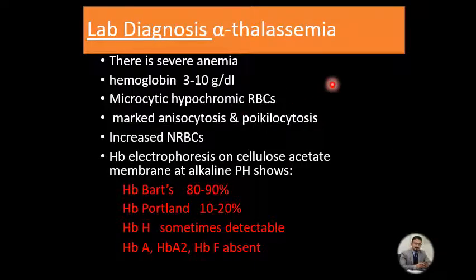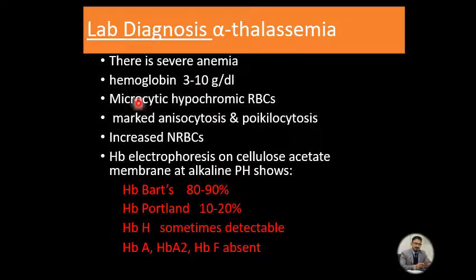For lab diagnosis of hydrops fetalis, the hemoglobin level is 3–10 g/dL, most commonly 3–5 g/dL. There is severe microcytic hypochromic red blood cell morphology with marked anisocytosis and poikilocytosis. Increased nucleated red blood cells are seen. On hemoglobin electrophoresis: HbBart is 80–90%, hemoglobin Portland is 10–20%, and HbH is sometimes detectable. Hemoglobin A, hemoglobin A2, and hemoglobin F are completely absent.